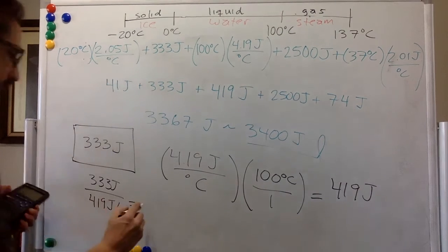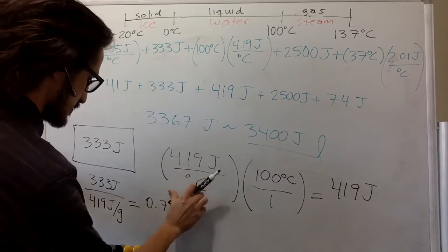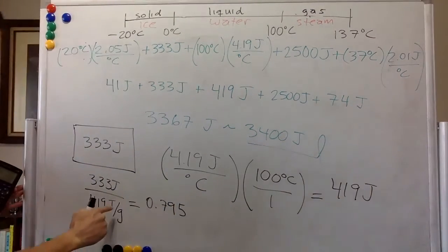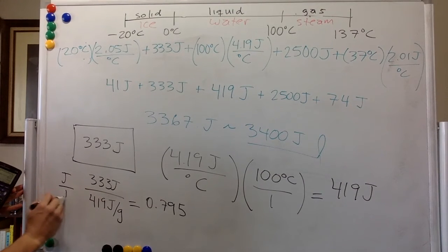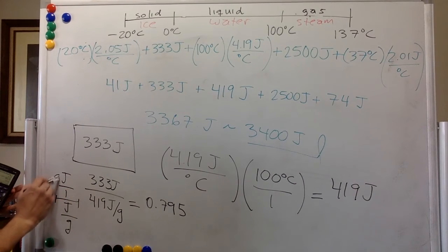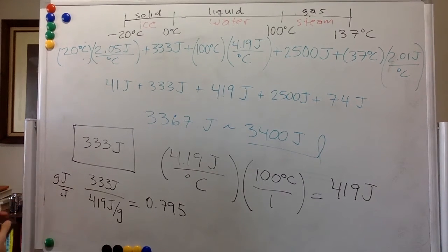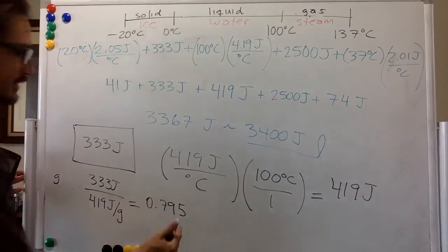0.795. That's an ugly 9. And so you have joules divided by joules. And so you end up with grams. So the units are grams.